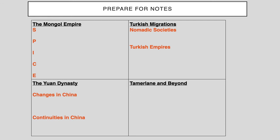Before we begin, you should prepare for notes. On a piece of paper, you want to put the slide on pause and divide your piece of paper into four sections. This is going to be your assignment that you submit to show that you've watched these lectures. You're going to want to take notes on this video in the first box that says Turkish Migrations — notes on nomadic societies and on Turkish empires.